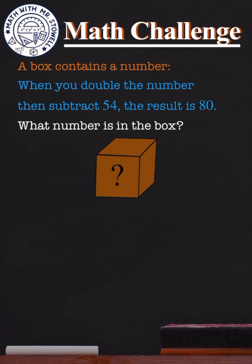A box contains a number. When you double the number, then subtract 54, the result is 80. What number is in the box?